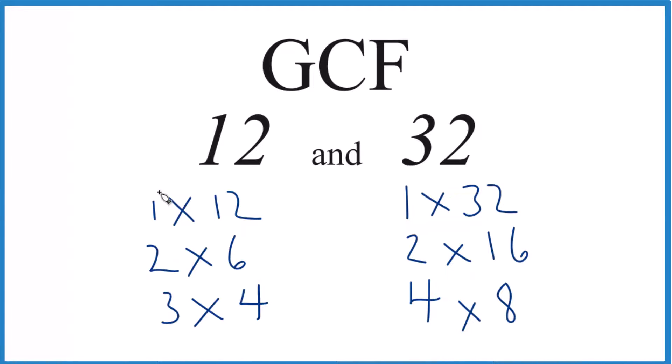So now we find which ones are in common. Well, they both have 1 and 2, that goes into 12, and 2 goes into 32 evenly. Then we have 4, and it looks like 4 is the greatest one of those factors, the greatest common factor.